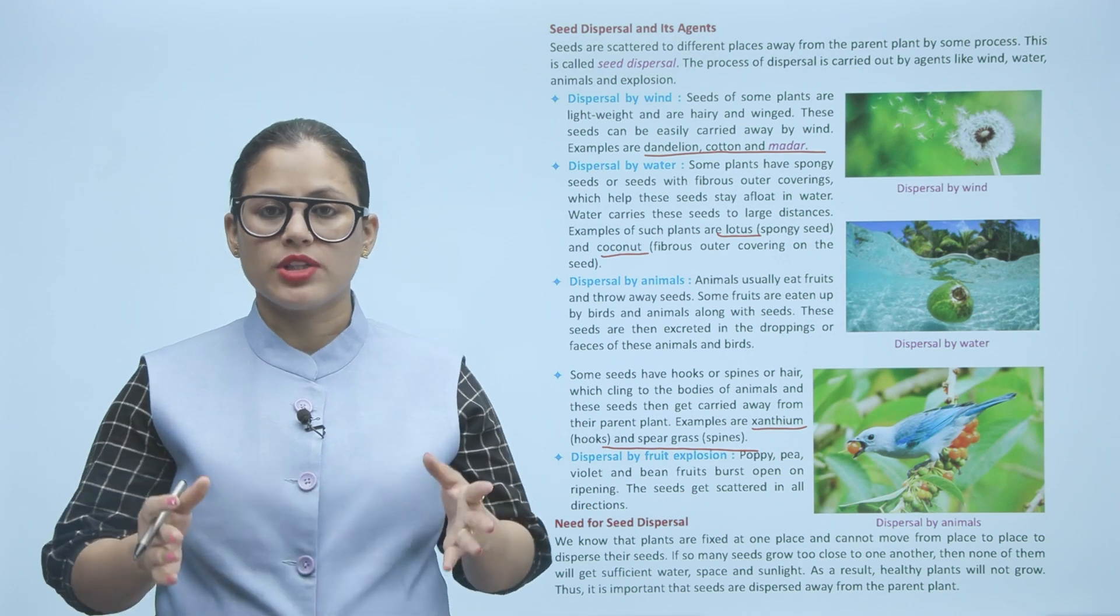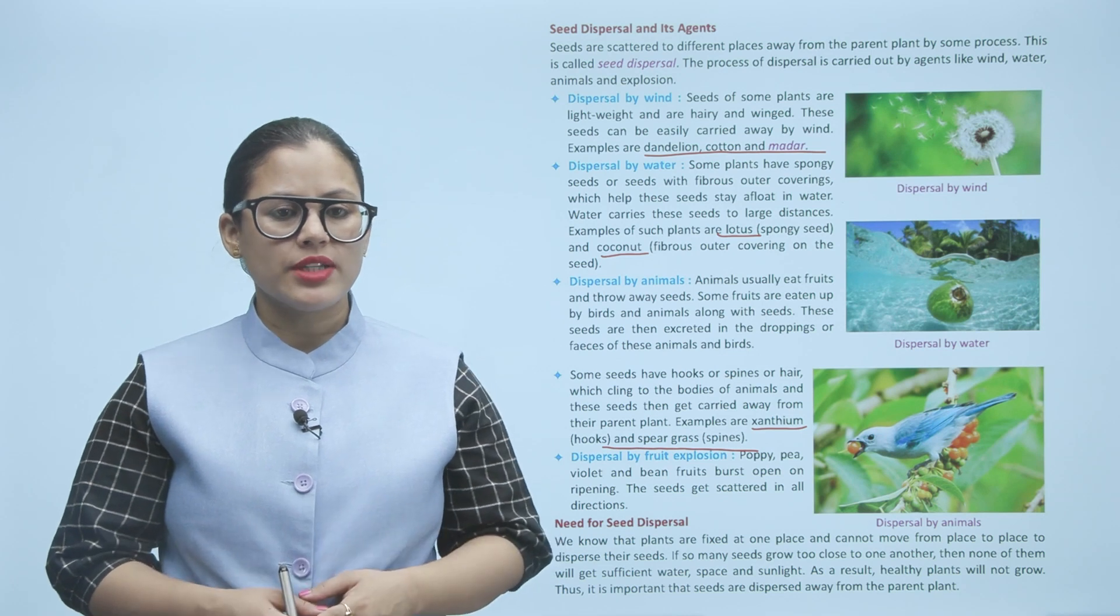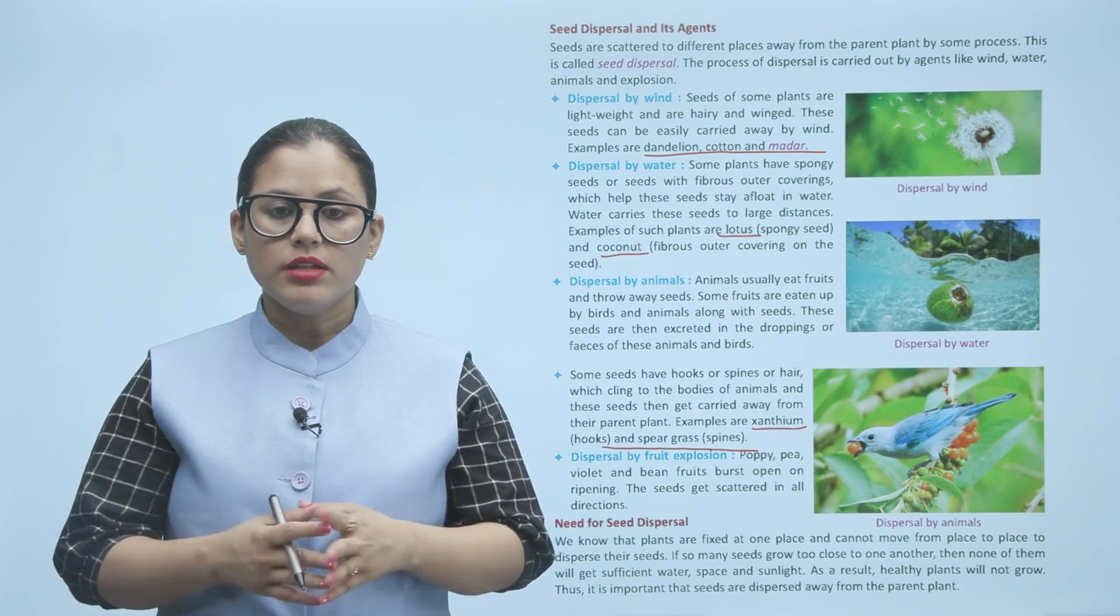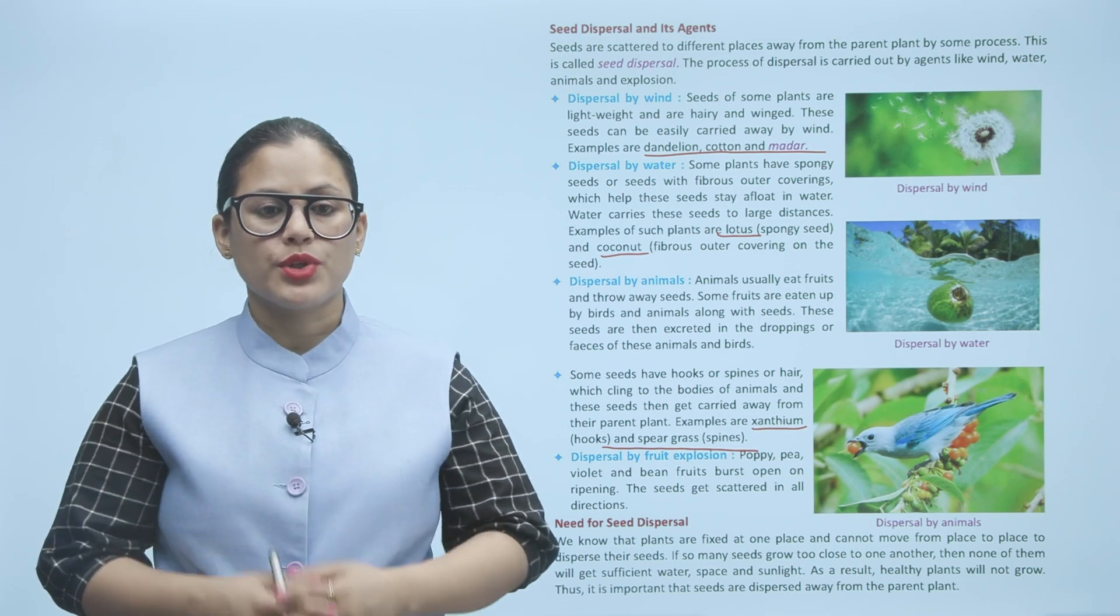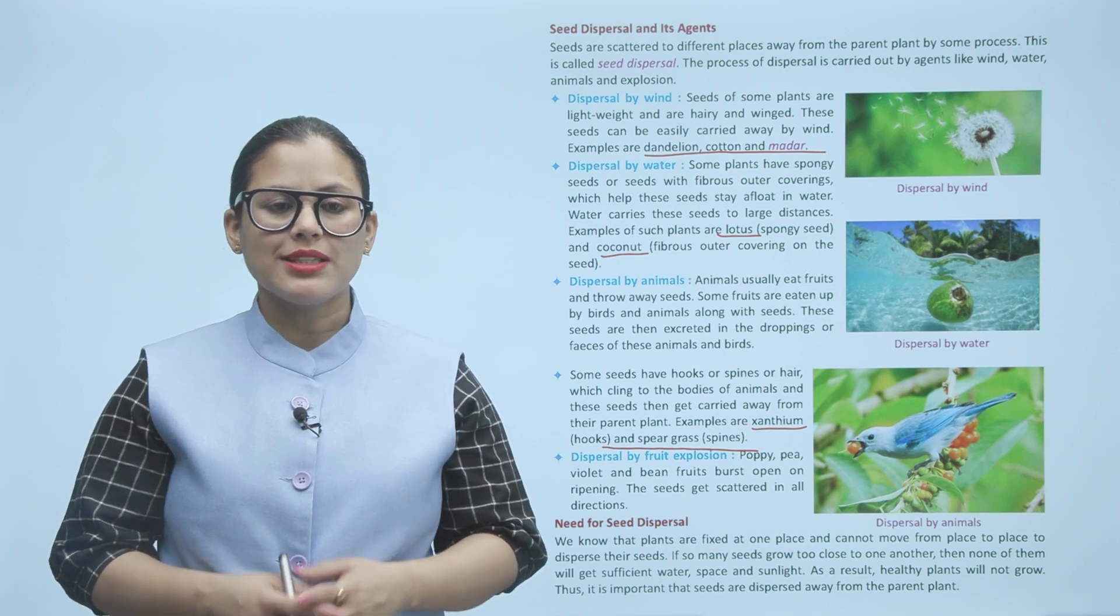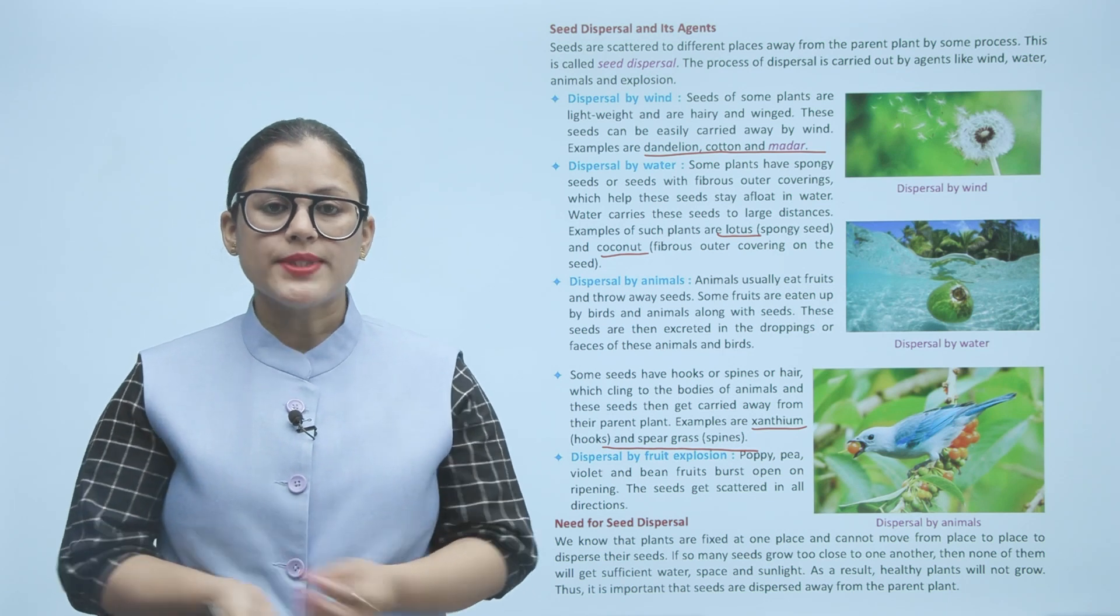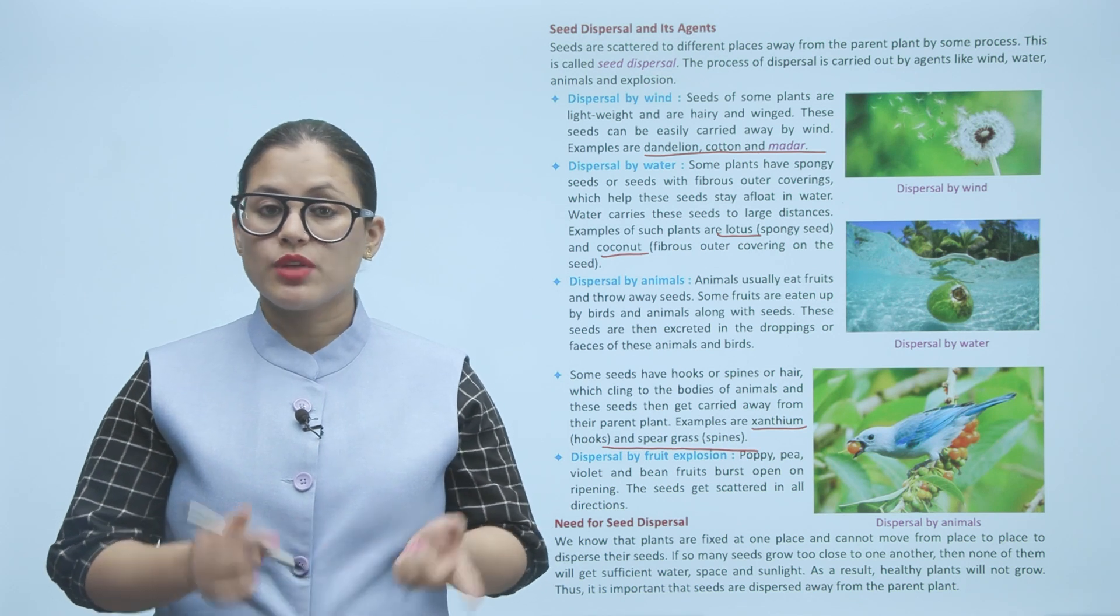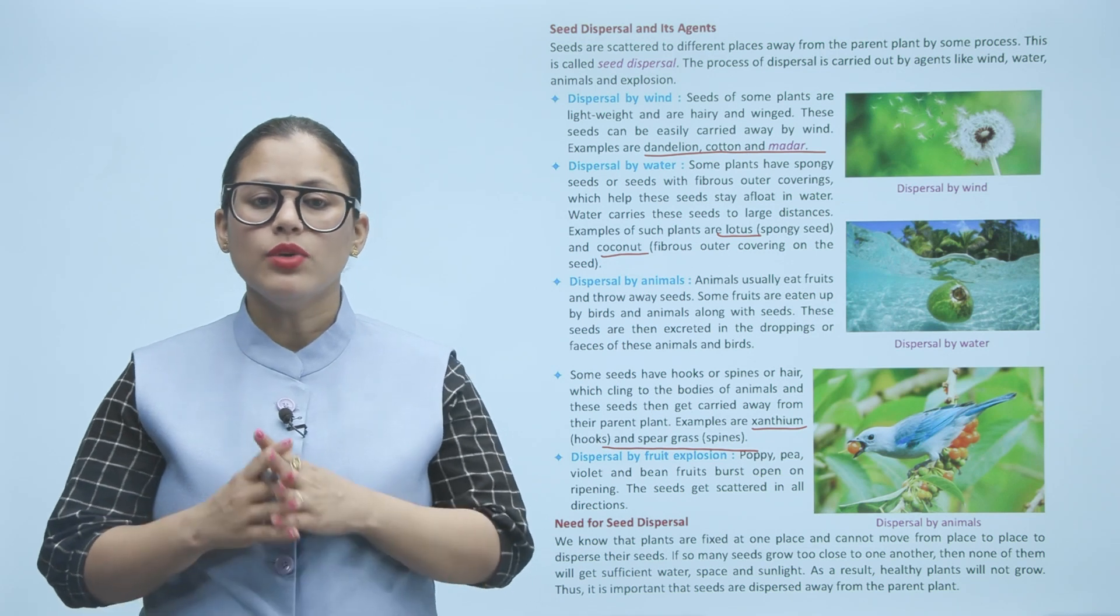Need for seed dispersal: We know that plants are fixed at one place and cannot move from place to place to disperse their seeds. If so many seeds grow too close to one another, then none of them will get sufficient water, space, and sunlight. As a result, healthy plants will not grow. Thus it is important that seeds are dispersed away from the parent plant.